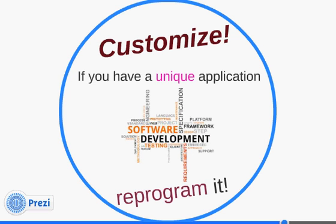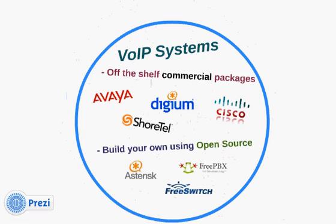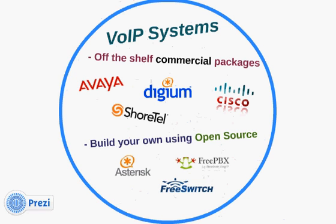Legacy systems were hardware based — if you wanted to make a change, you'd have to change the firmware, put in a new circuit board, or redesign a board, which was very difficult. With voice over IP, it's software based and you can make changes in a matter of hours or days. There are also many commercial off-the-shelf VoIP systems that you can purchase.